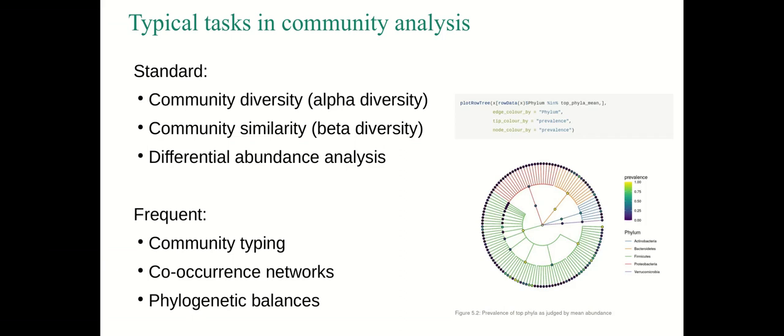Other frequently encountered analysis types include community typing which is kind of clustering of microbiome samples based on their community composition, co-occurrence networks for instance co-occurrences of different taxonomic groups across samples, and we can also look at other things like phylogenetic balances. What is the ratio of microbial abundances across different samples for given microbial groups. And then of course there is visualization that we can do to report these results.